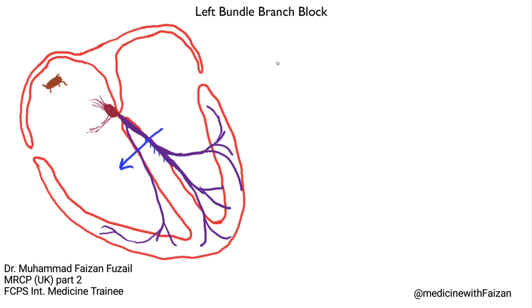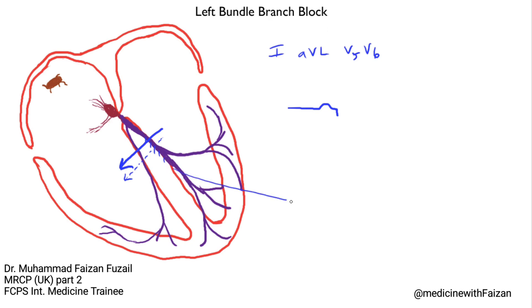What is early septal depolarization? Well, in the lateral leads — Lead I, AVL, V5, and V6 — a normal QRS complex should have a small Q wave, because the initial deflection is away from the lateral leads, from left to right. So you get this negative deflection because it's going away from the lateral leads. Then the majority of the left ventricle is on the left side, so your vector is mainly down into the left. You get this very tall, positive R wave, and then sometimes a small S wave.